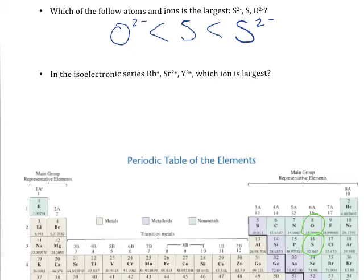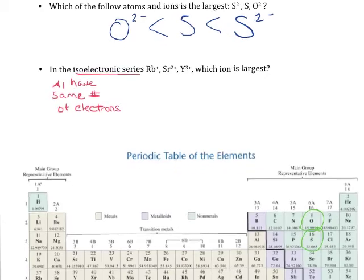Now they're telling us in this set that we have what's called an isoelectronic series. In isoelectronic series, they all have the same number of electrons. So let's try to figure out how many protons and how many electrons we have in each of these things.